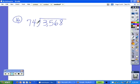We try another one. Can 74 go into 3? No. 35? No, but it can go into 356. The crutch would be 7 into 35. 7 goes into 35 five times. Now we have to multiply 5 times 74.